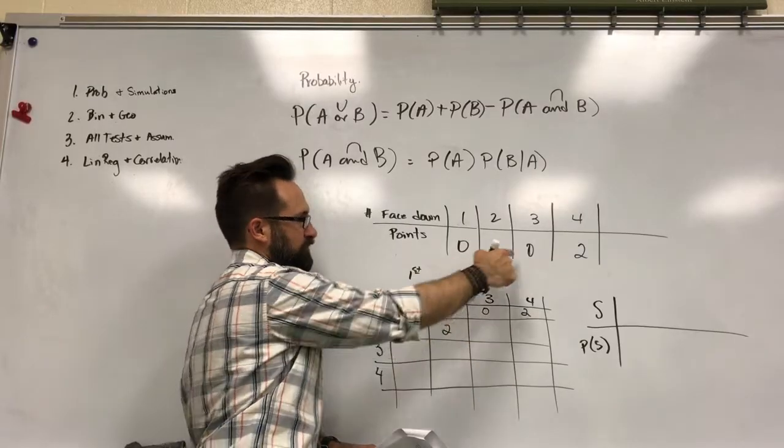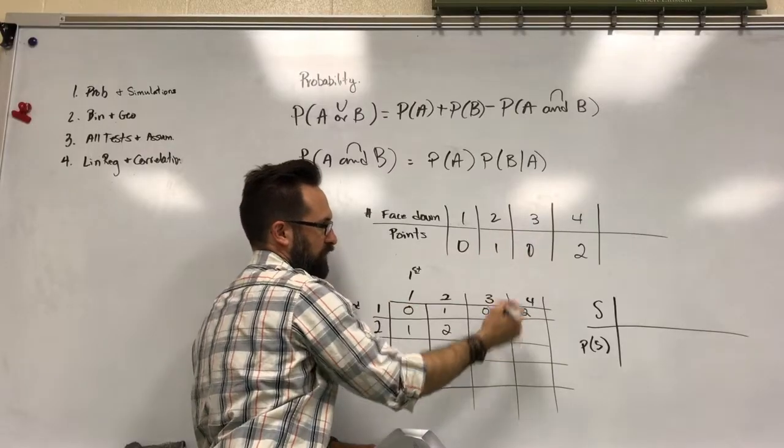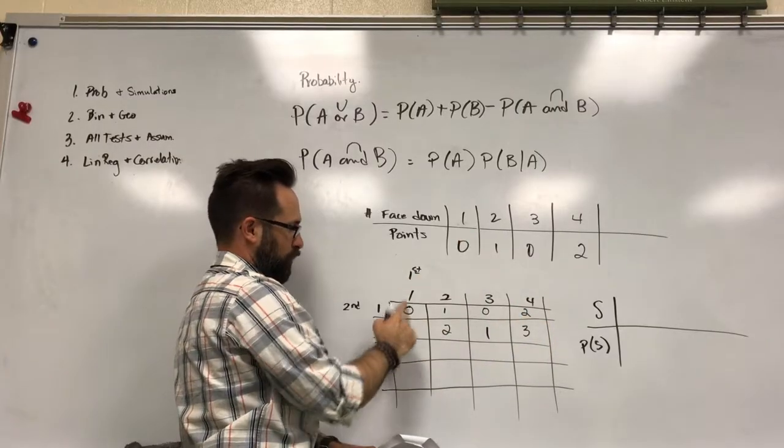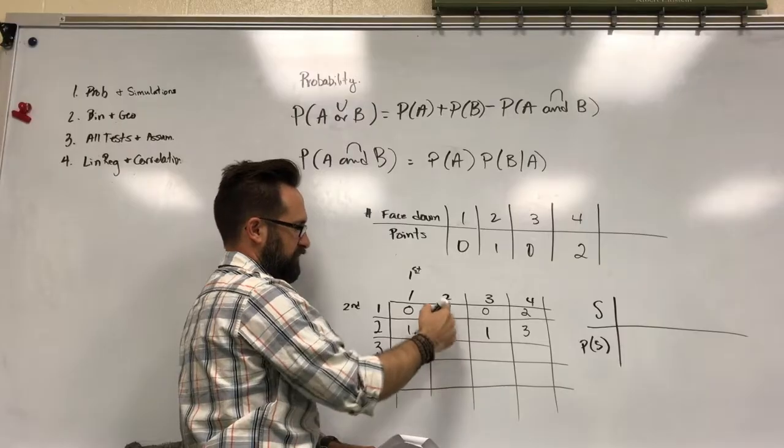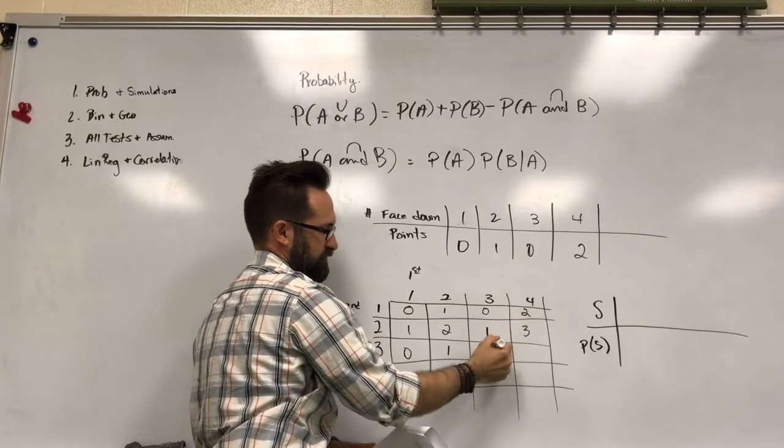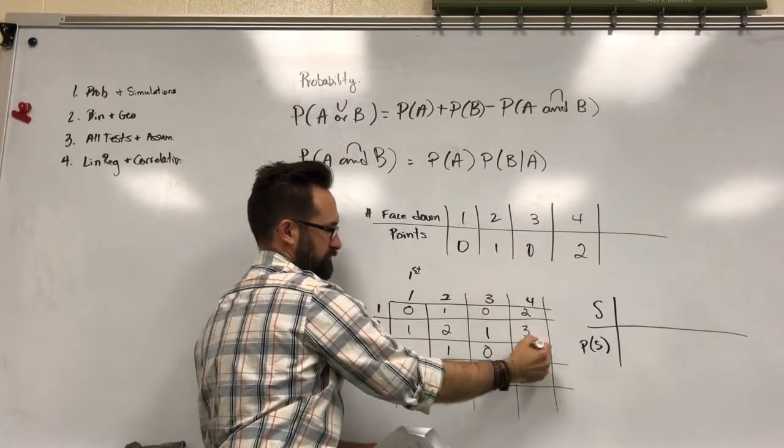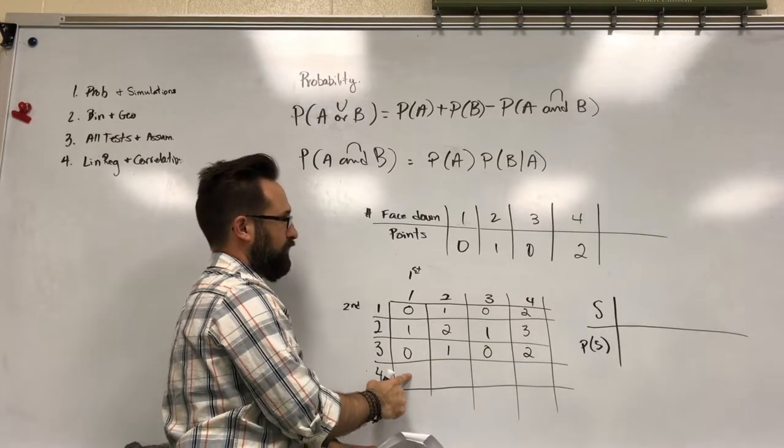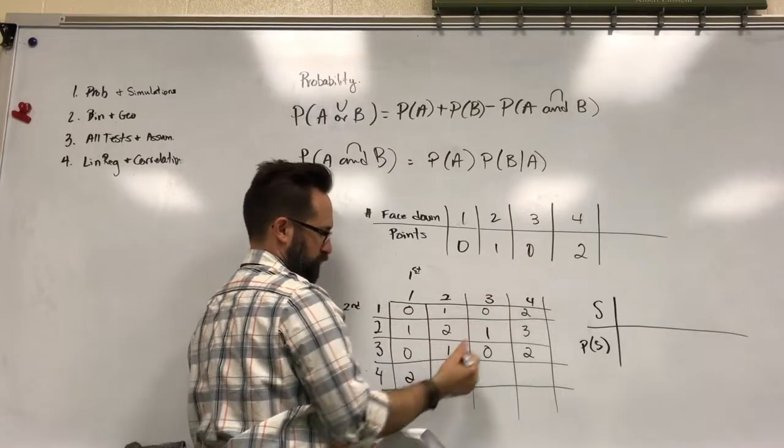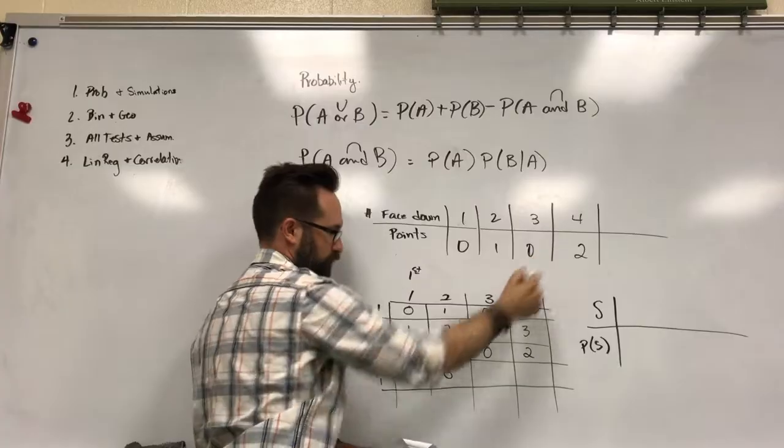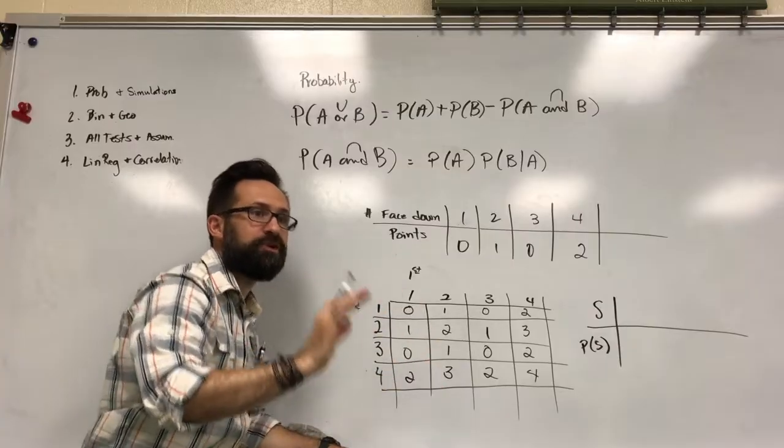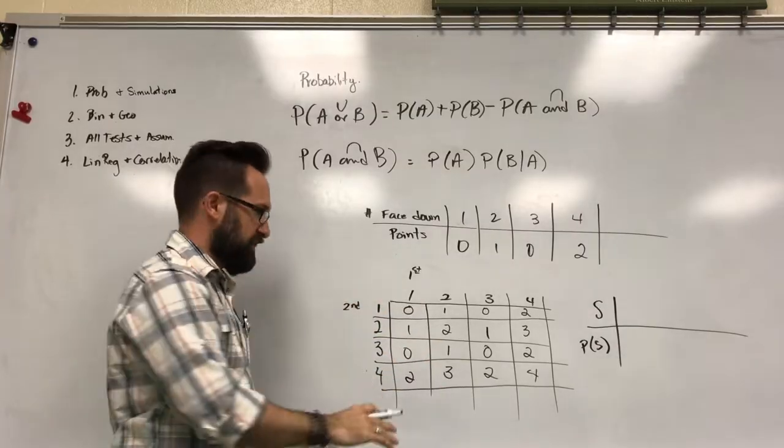That way we can get the sum so let's kind of work this little way out. Two and two that would be two. Three and two would be one. Four and two, so four and two would be three. Next one would be one and three which would be zero again. Two and three which would be one. Three and three which is zero. Four and three which would be two again. The last row, four. If I roll a one then a four that's two points. If I roll a two then a four that's a three pointer. If I roll a three then a four that's two points. If we roll a four then a four that's four points.